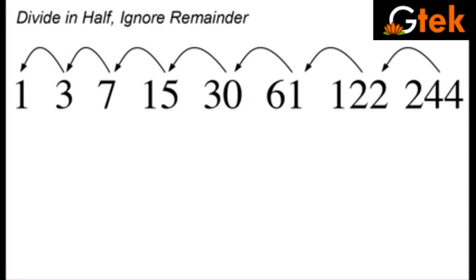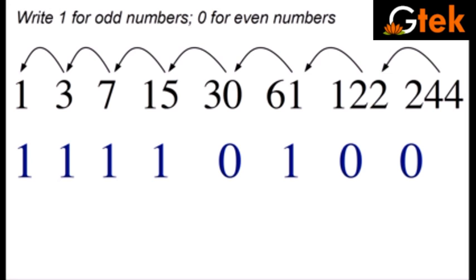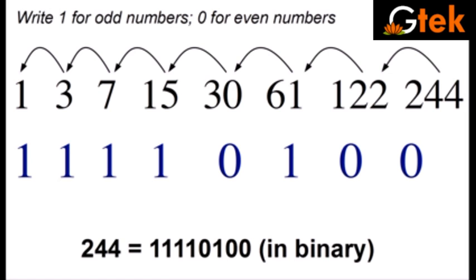Now I have to put 0 for even number and 1 for odd number. So 1, 3, 7, 15 is 1. So 30 is even 0, 61 is odd 1, 122 is even 0, 244 is 0. So the answer for the question 244 is equal to 11110100 in binary format.